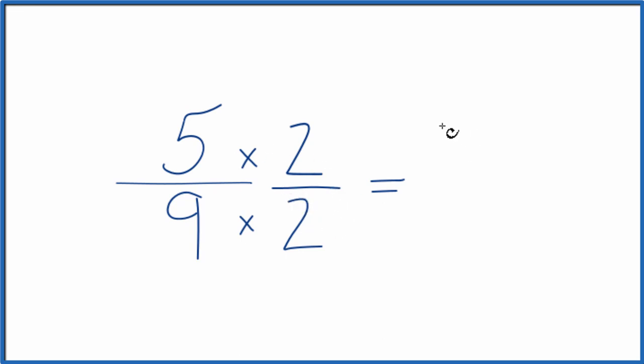But now 2 times 5 is 10, and 2 times 9, that's 18. And this is an equivalent fraction for 5 ninths. If you divided 5 by 9 or 10 by 18, you get the same decimal value.